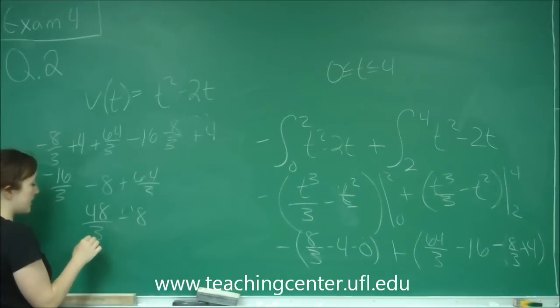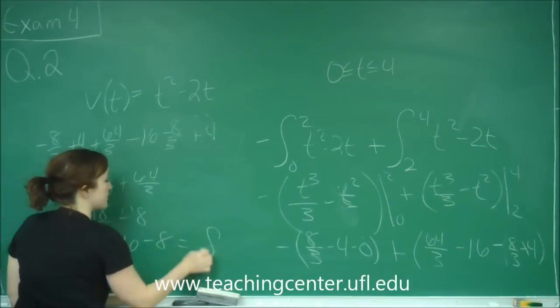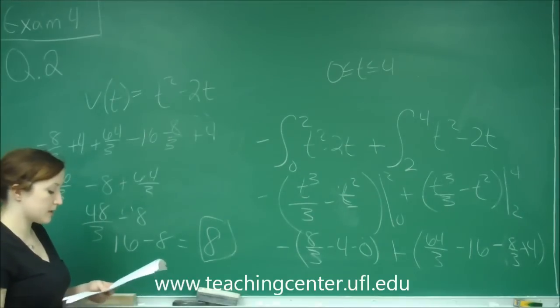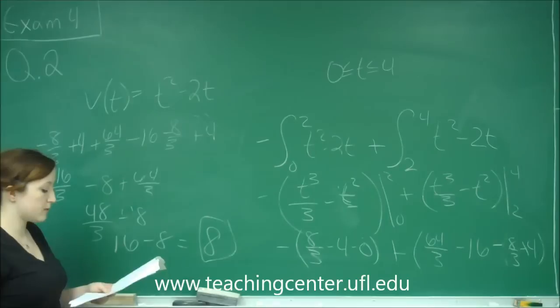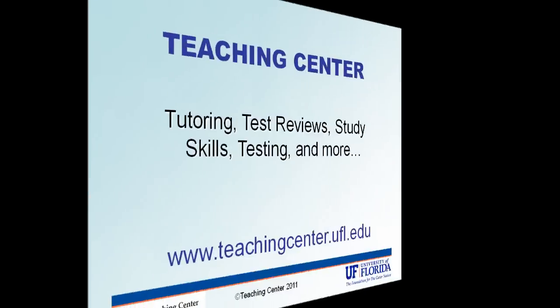So your final answer is 8, and that is choice letter C, 8 feet. So your total distance between 0 and 4 that you're traveling is 8 feet.